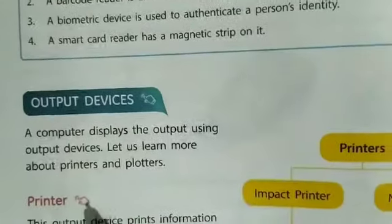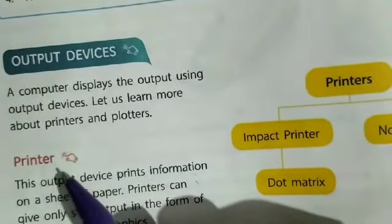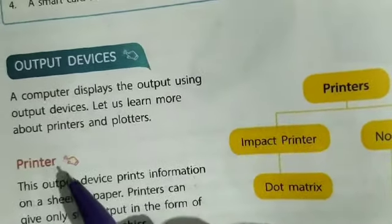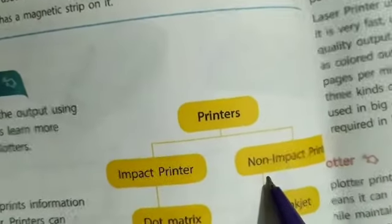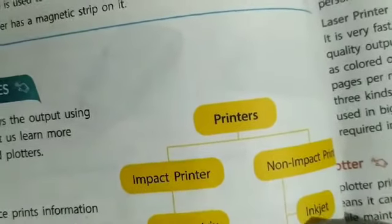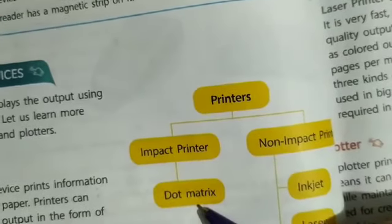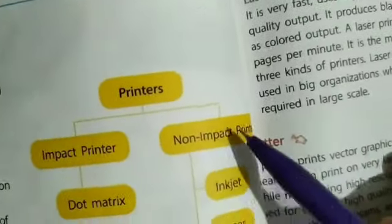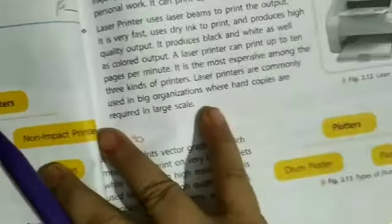In our previous video I told you what are output devices and examples of output devices. I explained what is a printer and how many types of printer are there. There are two types of printer: impact printer and non-impact printer. The example of impact printer is dot matrix printer, and examples of non-impact printer are inkjet and laser printer.